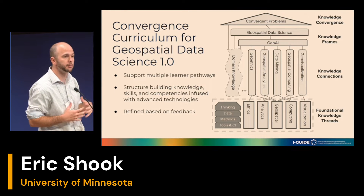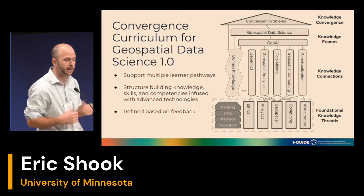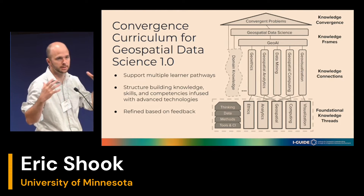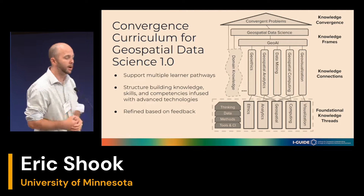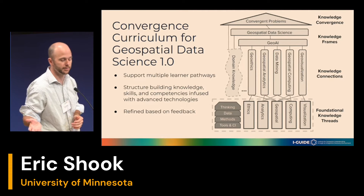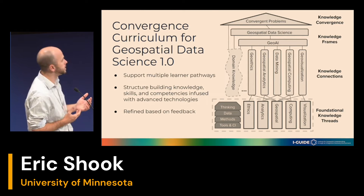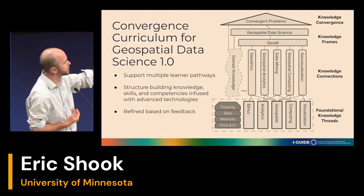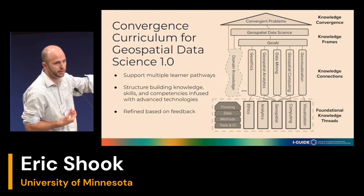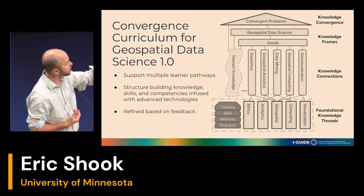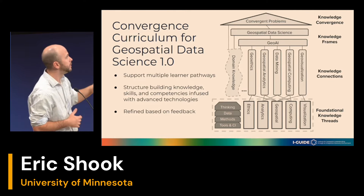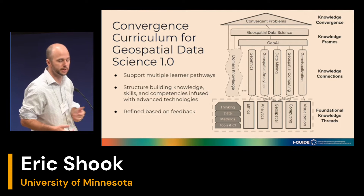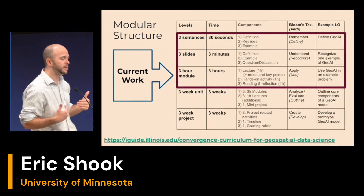Once you've framed your problem and built up your knowledge frame, that's when we get to knowledge convergence — really bringing in domain knowledge and geospatial data science to tackle those bigger problems. Different learners will experience this curriculum differently. If you're a GI scientist, you already have foundational knowledge in geospatial and analytics — you don't need to rebuild that. But you might need more knowledge in computing or ethics. If you're a social scientist, maybe you're strong in ethics and analytics but need to learn more about visualization.